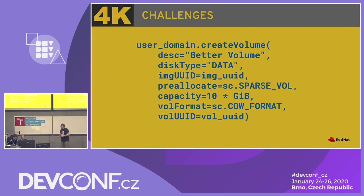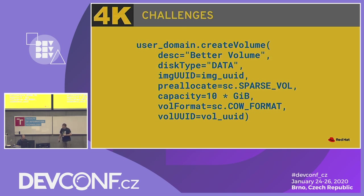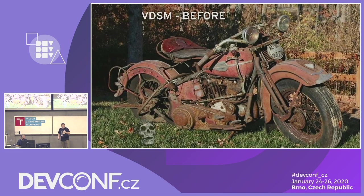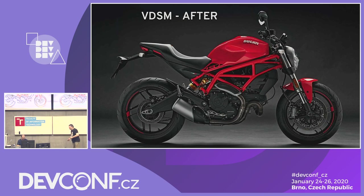We also have a user domain fixture that creates everything for you. You just use this object — it creates a storage domain and you can start getting volumes and making changes. Before we made these changes, we took a picture of VDSM. That was VDSM before. This is VDSM now — much better.